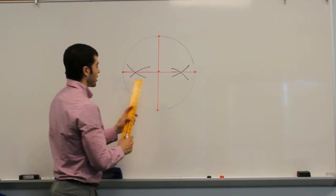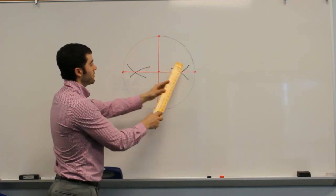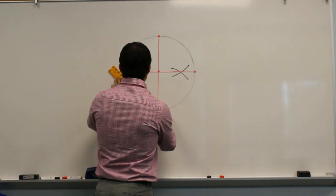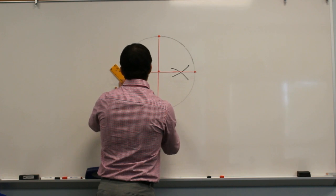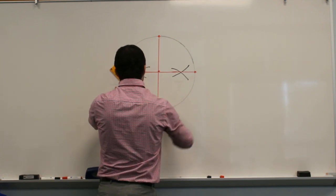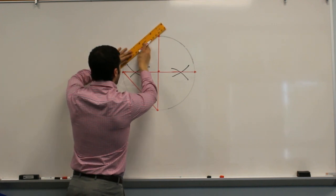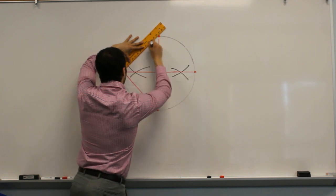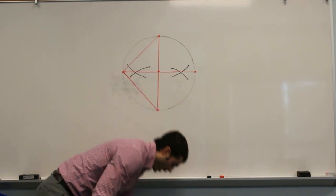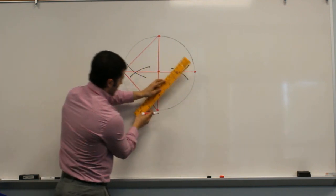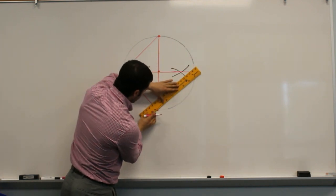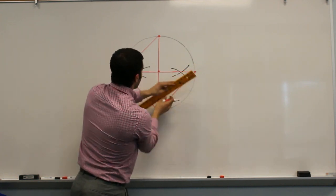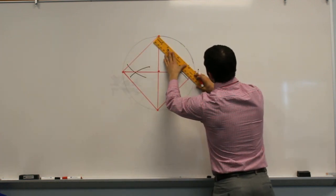In order to construct our square, we're going to connect all of these intersection points from the diameters that we drew. So we can connect two points here, two points here, two points here, and finally these last two points here.